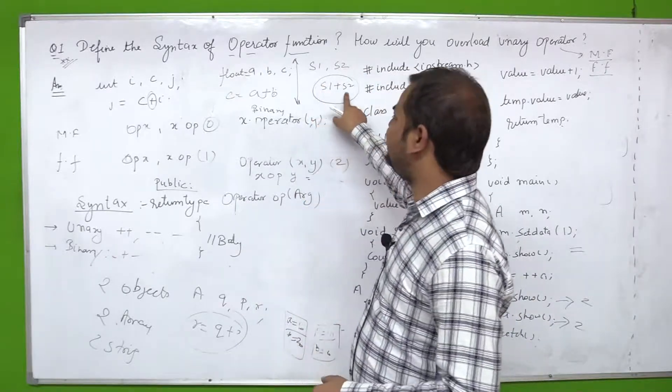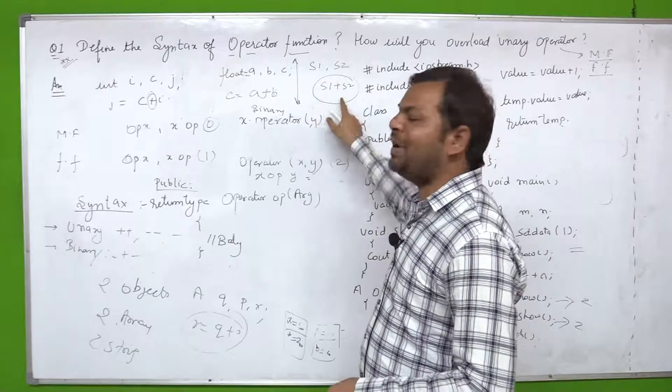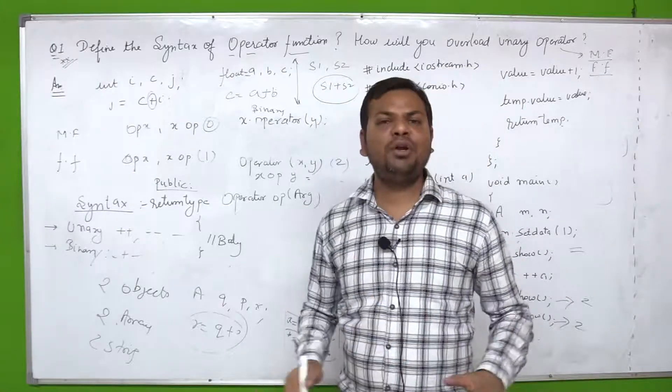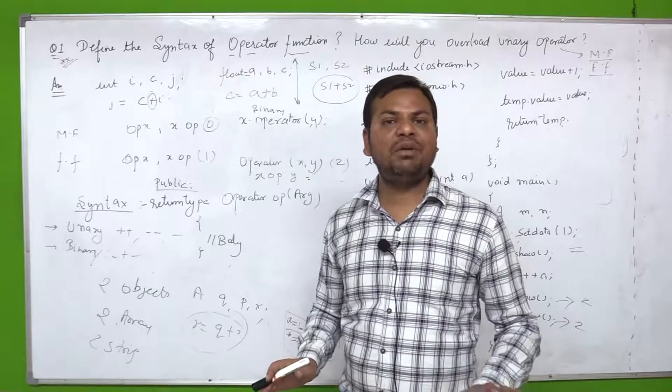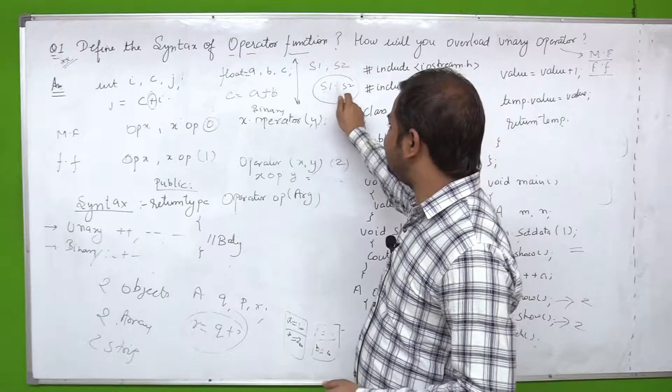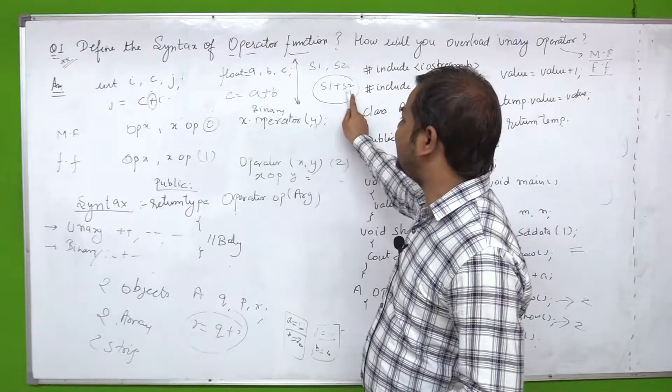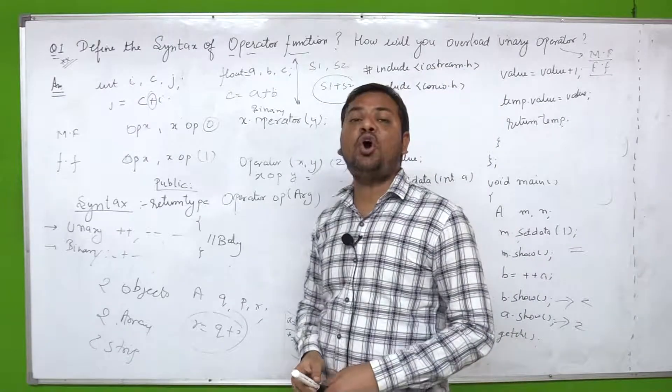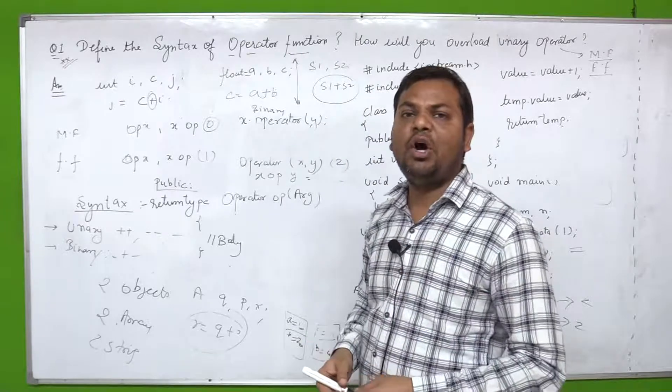But with help of operator overloading what did we do? User defined data types like objects, strings, arrays - on these also we used operators. Like suppose s1 plus s2, two strings, if I want to sum these, without operator overloading it is not possible without using concatenate function. This is called operator overloading.